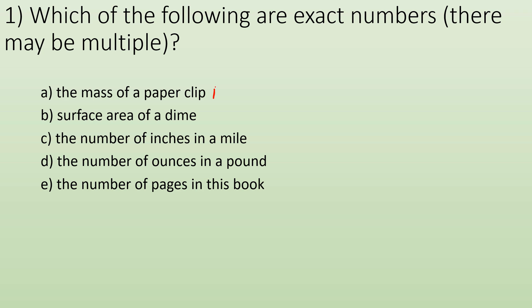So the mass of a paper clip, that's going to be a measured number, so it's not going to be exact. Surface area of a dime, we're going to have to calculate that so there's going to be measurements involved. Number of inches in a mile, this is a definition. It's an exact number. We've defined how many inches are in a foot and how many feet are in a mile, so that's an exact number.